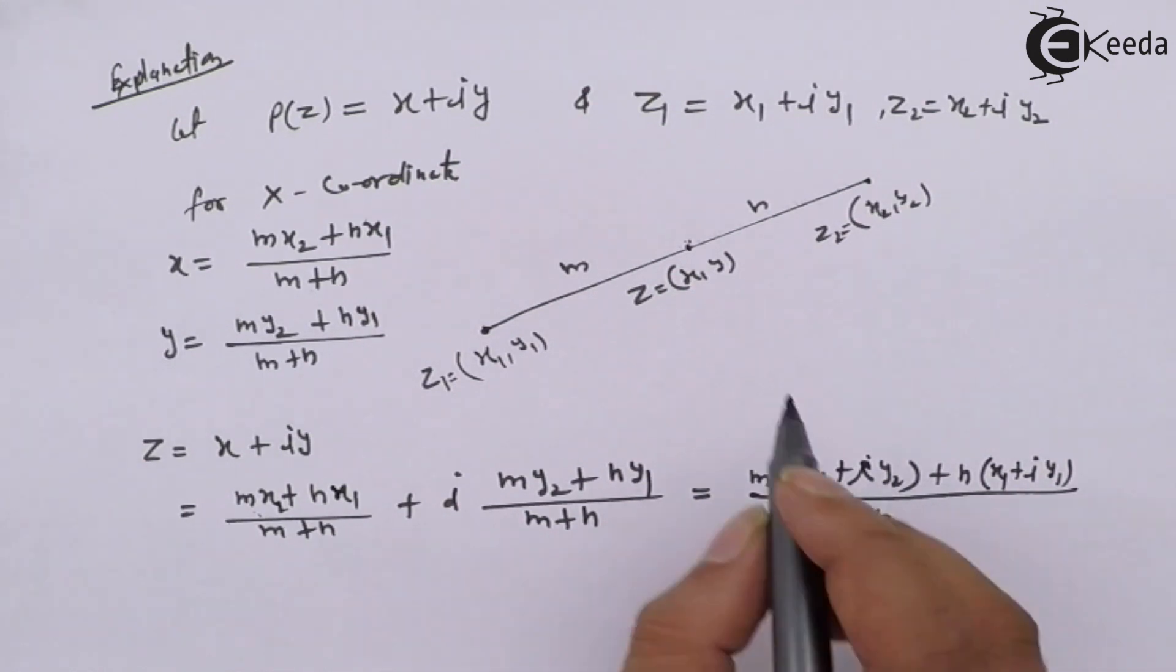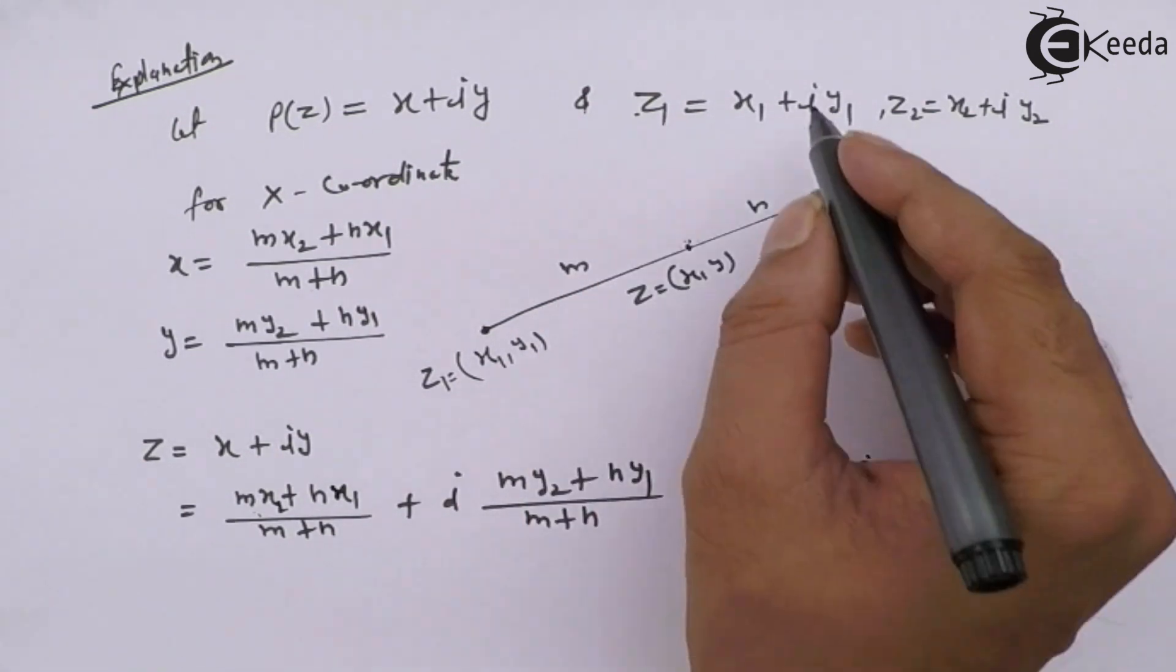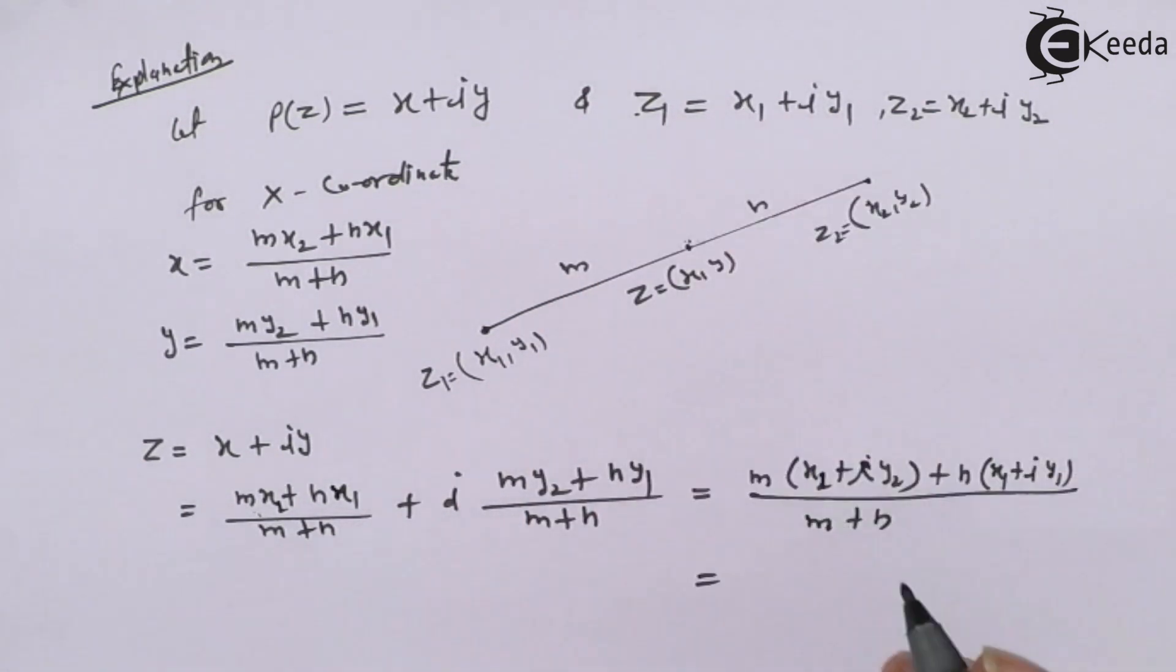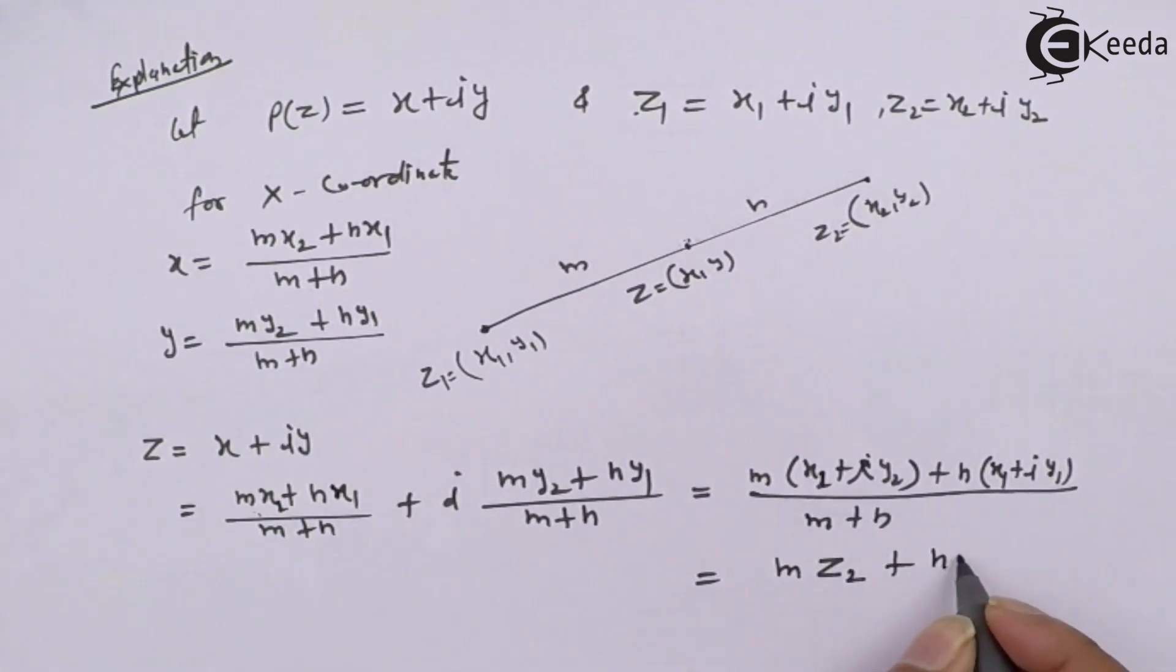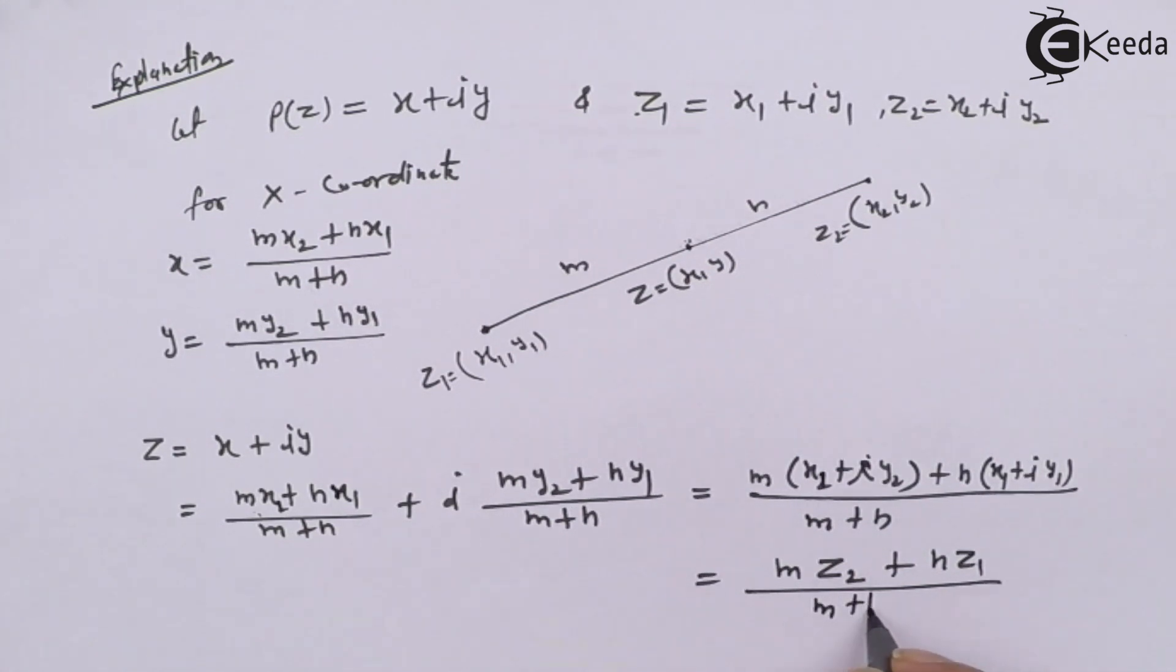What is this? This is the z2 and this is the z1. So M z2 plus N z1 upon M plus N. So this is the explanation of section formula in complex number.